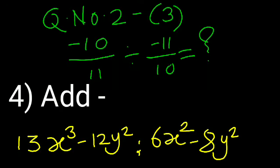Next question. Question number 2.3. Minus 10 upon 11 divided by minus 11 upon 10. And also fourth question, addition: 13x cube minus 12y square and 6x square minus 8y square. Now we have to solve these two questions with separate slide. Please understand all solutions and try to write with proper steps while solving all questions in your answer sheet. Students, you have to submit your answer sheet to your teachers for evaluation.